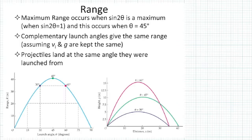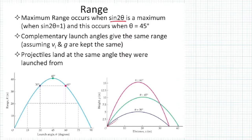The maximum range occurs when sine of two-theta is at a maximum — that is, when sine of that doubled angle equals one. That angle is 45 degrees. If you have an angle lower than 45, like 30 degrees, it won't get very high and doesn't have enough to get downrange very far.